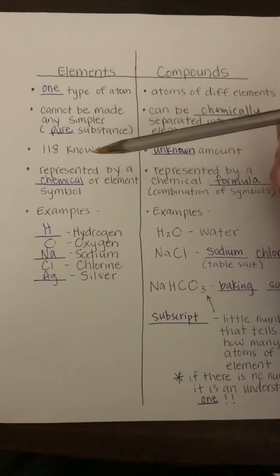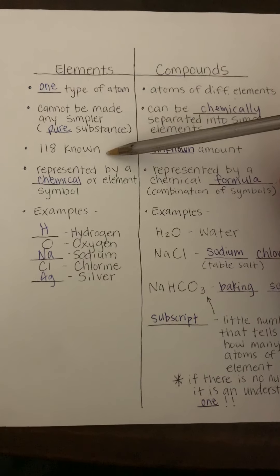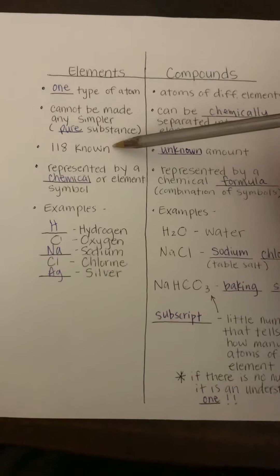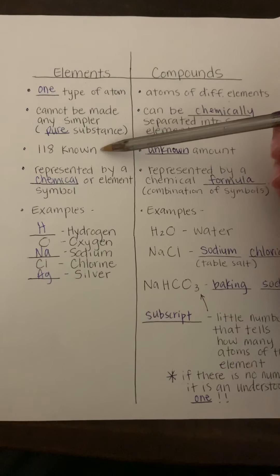Okay, so they are pure. There's 118 that we know of as of today, and that's why your periodic table, an updated one, technically goes to 118.